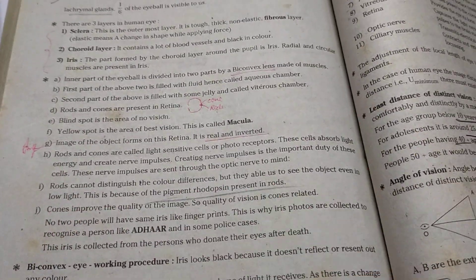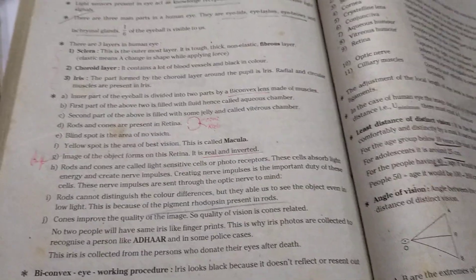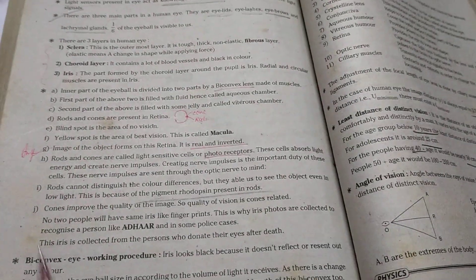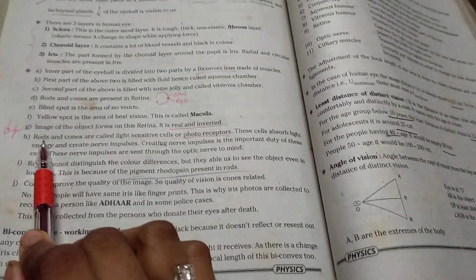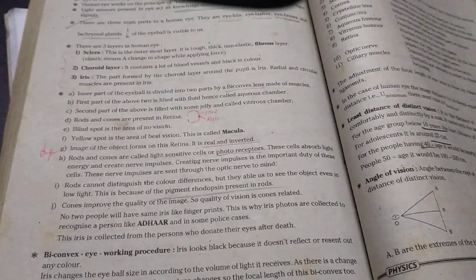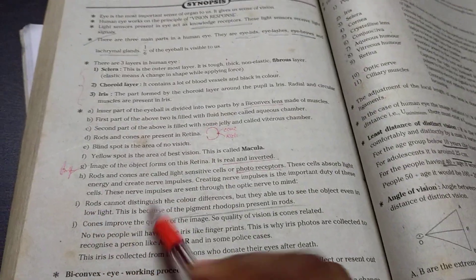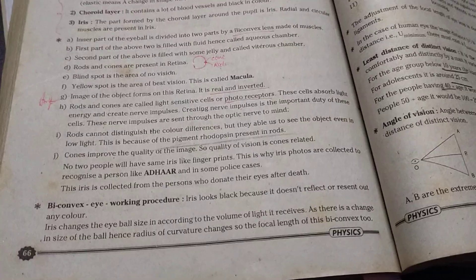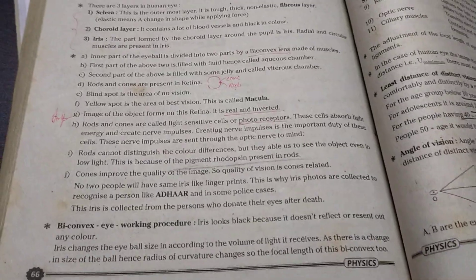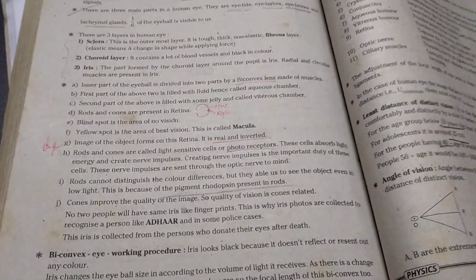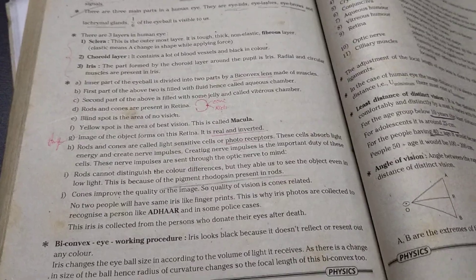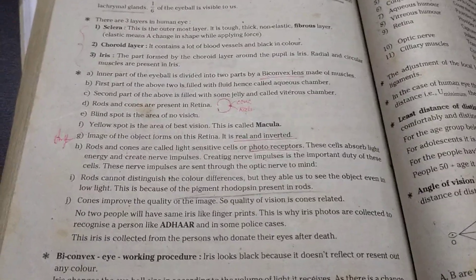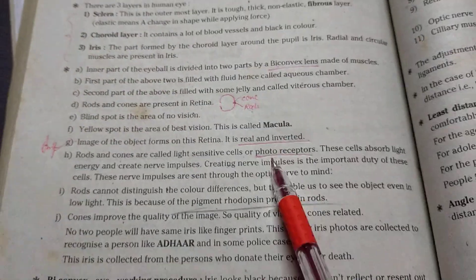And rods and cones are called light sensitive cells or photoreceptors. So why we'll call the photoreceptors? Because rods are light intensity and cones are related to colors. To see colors also, if light is not there in any object you cannot see anyone even its color or anything else. Photoreceptors, receptors is nothing but to take, to grasp something right. Photo, photon. So light unit is photon and it will grasp the light. So without light we cannot see anything else. So it's called photoreceptors.